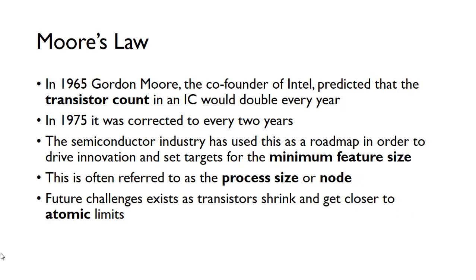In 1965, Gordon Moore, co-founder of Intel, predicted that the transistor count in an IC would double every year. This was later revised to every two years, but the semiconductor industry has used this as a roadmap. It's not a law in the strictest sense — more of a prediction — but the semiconductor industry uses it as a target, trying to double the number of transistors that can fit in an IC every couple of years.